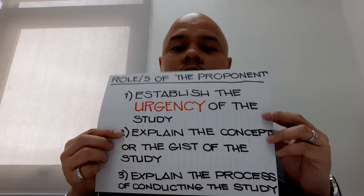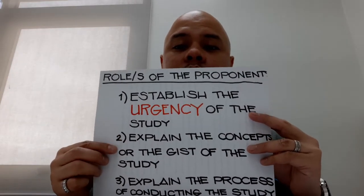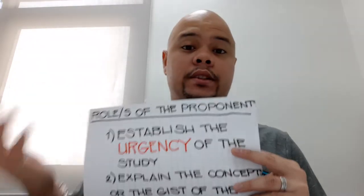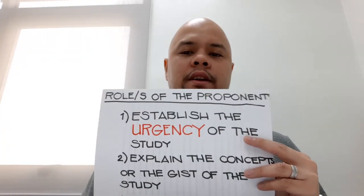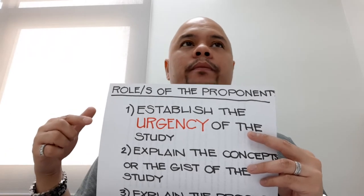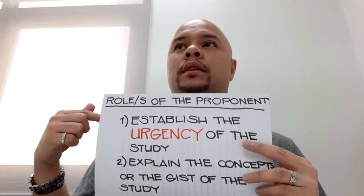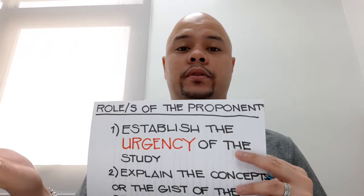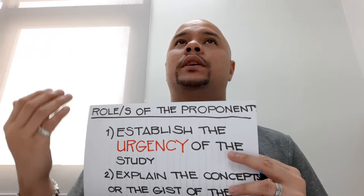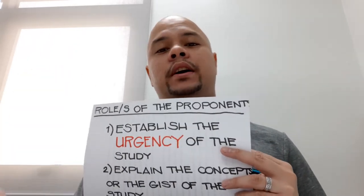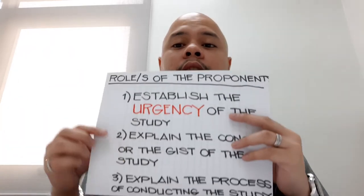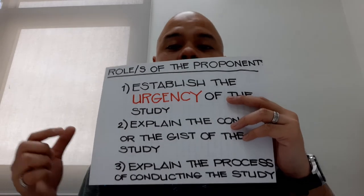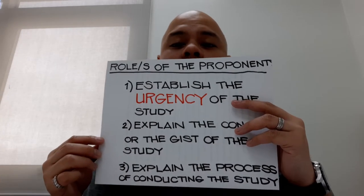Next, you are also going to explain the concepts or the gist of the study — simply what is your study all about, what are the known parts of your research, and what does the existing body of knowledge tell about your study. And last but definitely not the least, you're also going to explain the process of you conducting your study.